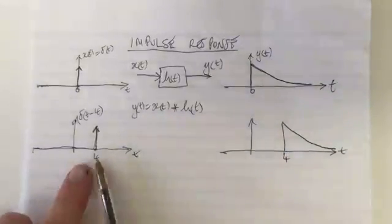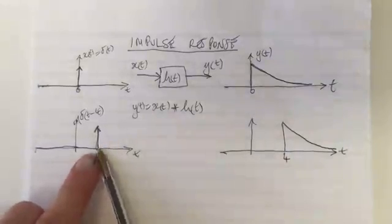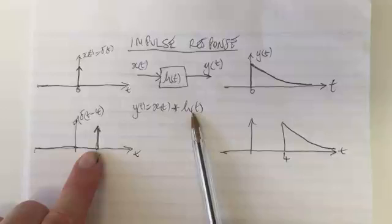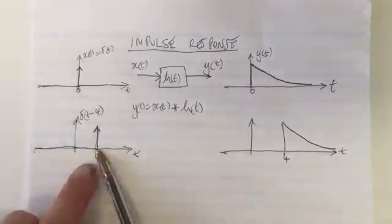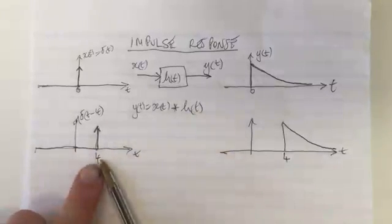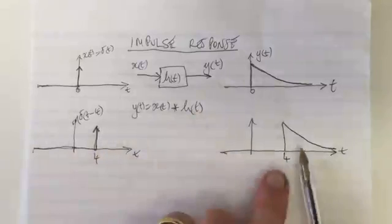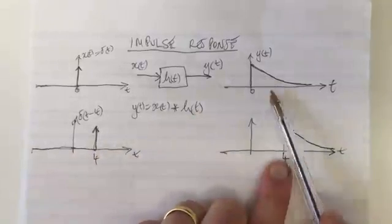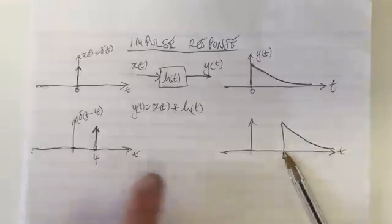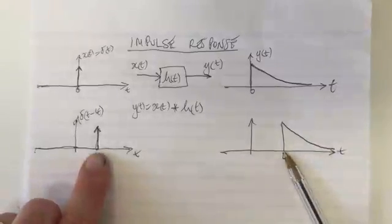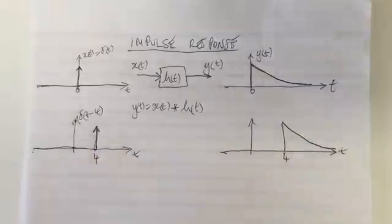But the higher level here is you can observe that if you're convolving a function with a delta function that is at a different time, so not at zero, then the result is that your function gets shifted to be centered at the time when the delta function is.